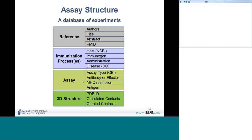The assay itself is the main point of data. We have a controlled vocabulary for all the different experiment types, using the Ontology for Biomedical Investigations, which is an ontology for experiment types. All of our assays are organized in a hierarchical format, which Carrie will talk about in more detail later.